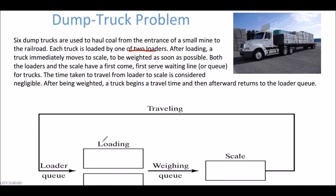Both the loaders and the scale have a first come first serve waiting line for the trucks — these queues over here. The time taken to travel from one loader to the scale is considered negligible. And then after being weighed, a truck begins a travel time and afterwards returns to the loader queue.